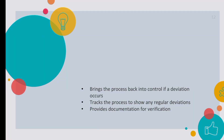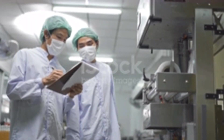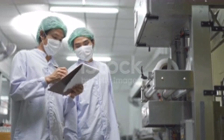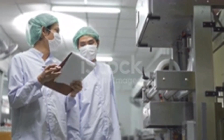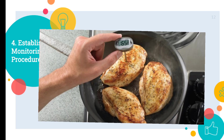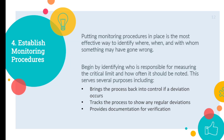The fourth principle is Establish Monitoring Procedures. After establishing the critical limit, we need to provide employees with a way to check that each limit has been met. Putting monitoring procedures in place is the most effective way to identify where, when, and with whom something may have gone wrong. The best way to monitor the chicken is to use a cleaned and sanitized probe thermometer to record the temperature at the thickest part of the chicken. Each piece of chicken cooked on the grill must meet the minimum internal temperature of 165 degrees for 15 seconds.